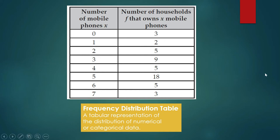So what information do we get from this? Well, three households do not own a mobile phone. Nine households out of 50 own three. Eighteen households out of 50 own five. Three households out of 50 own seven.